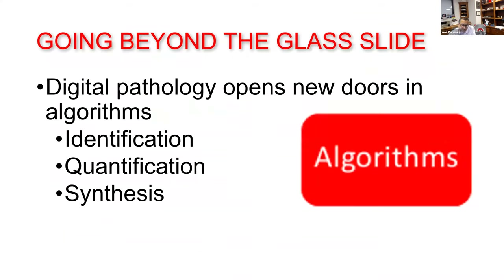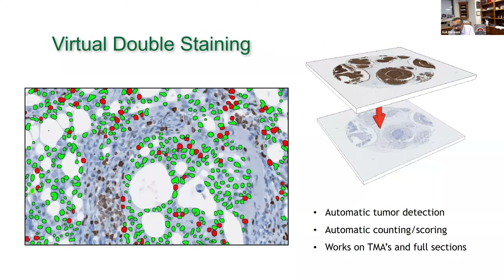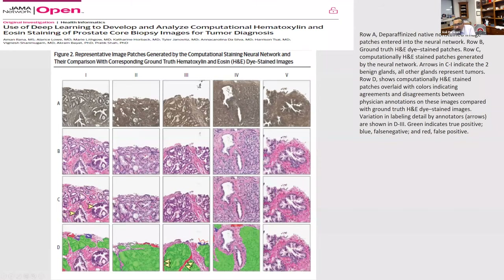Once you have slides digitized, you have opened new opportunities for algorithms. These boil down to identifying things like H. pylori in gastric biopsies, quantifying Ki-67 signals in breast and neuroendocrine carcinomas, and finding new features you would otherwise miss. We are now using this to build tools for biomarker assessment for PD-L1, multiplexing, novel ways to quantitate biomarkers, and work with tissue microarrays or full sections. This has really gone beyond H&E slide review.